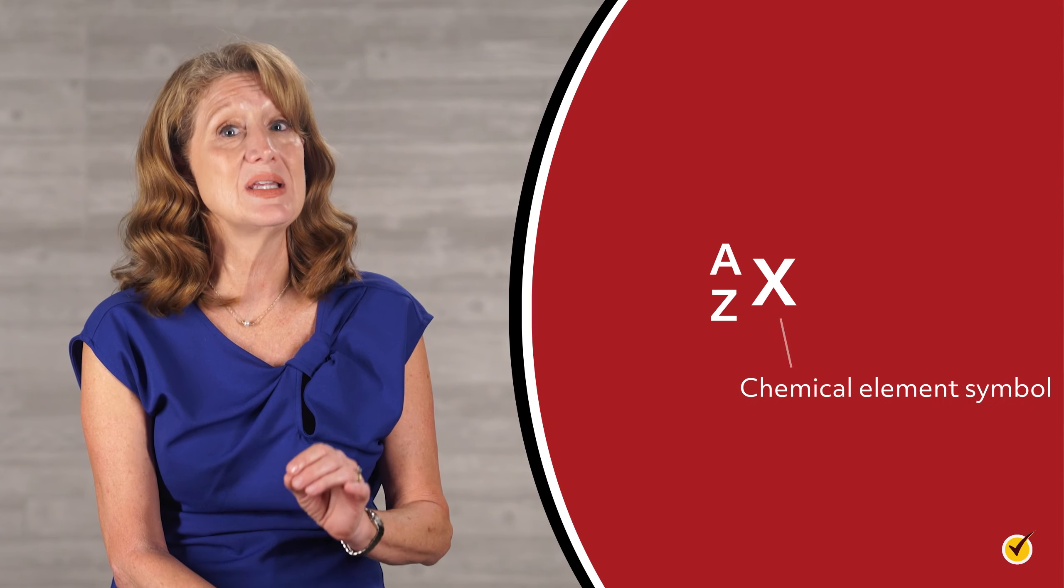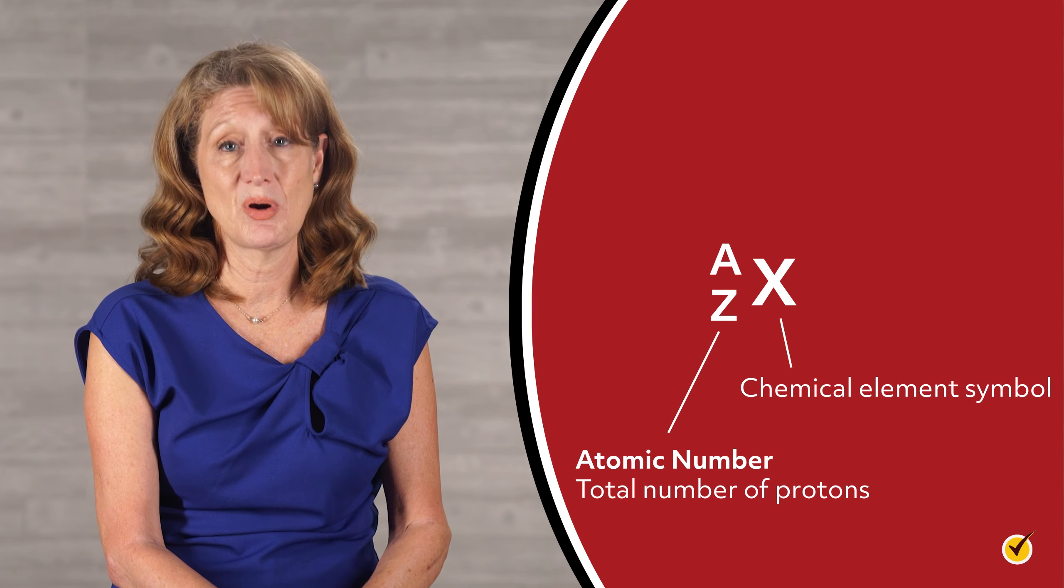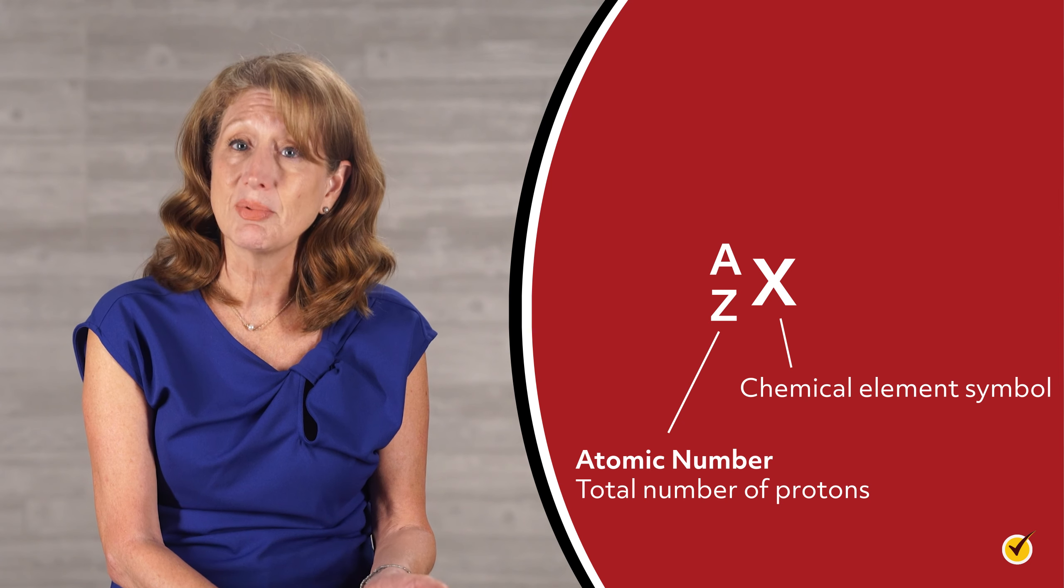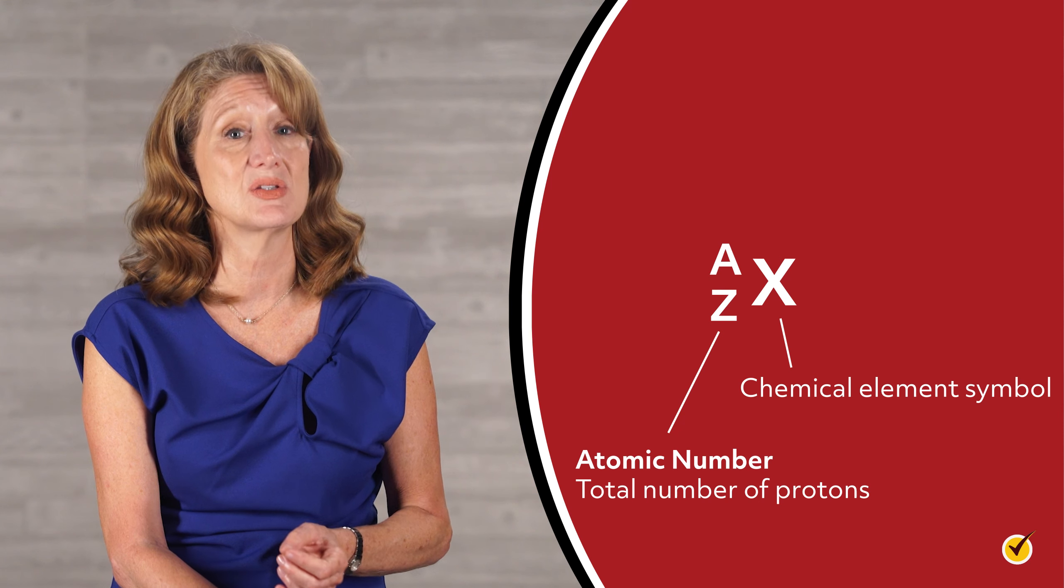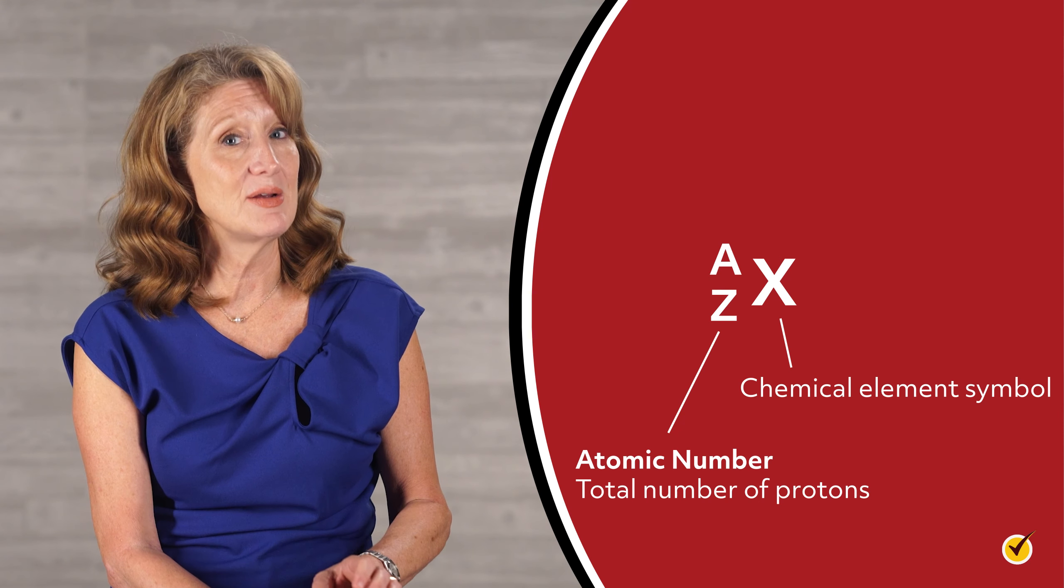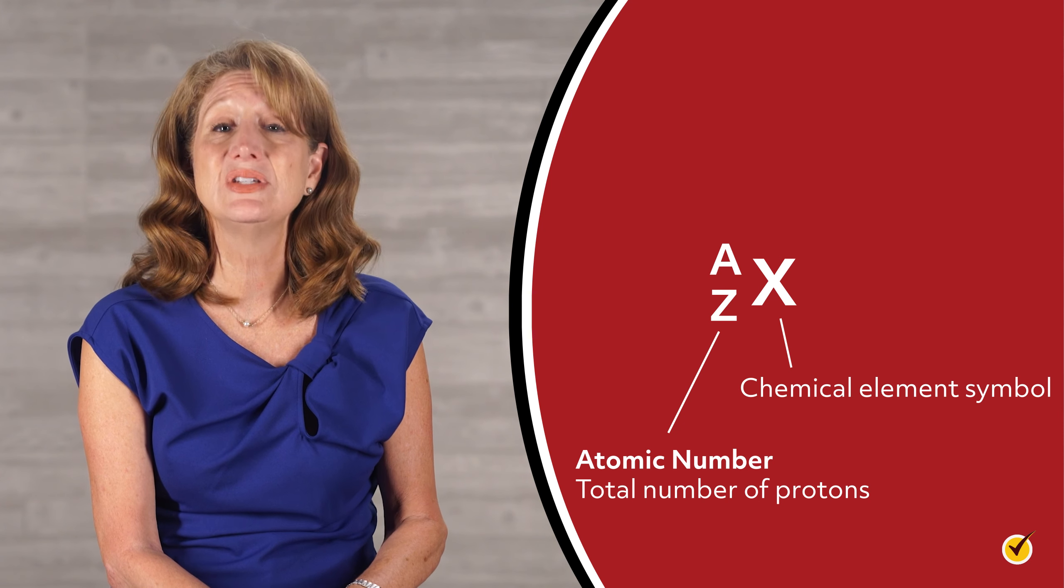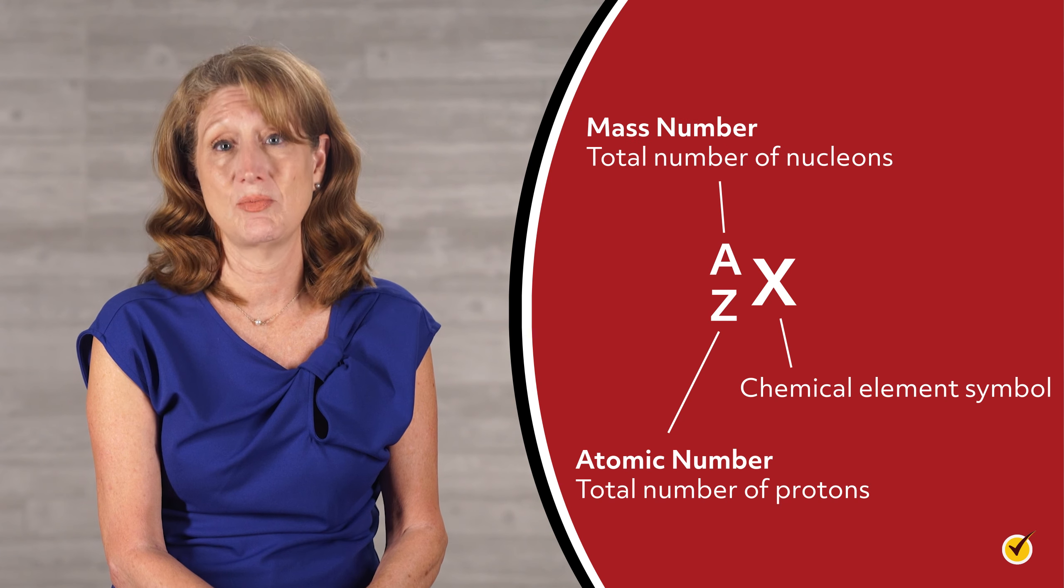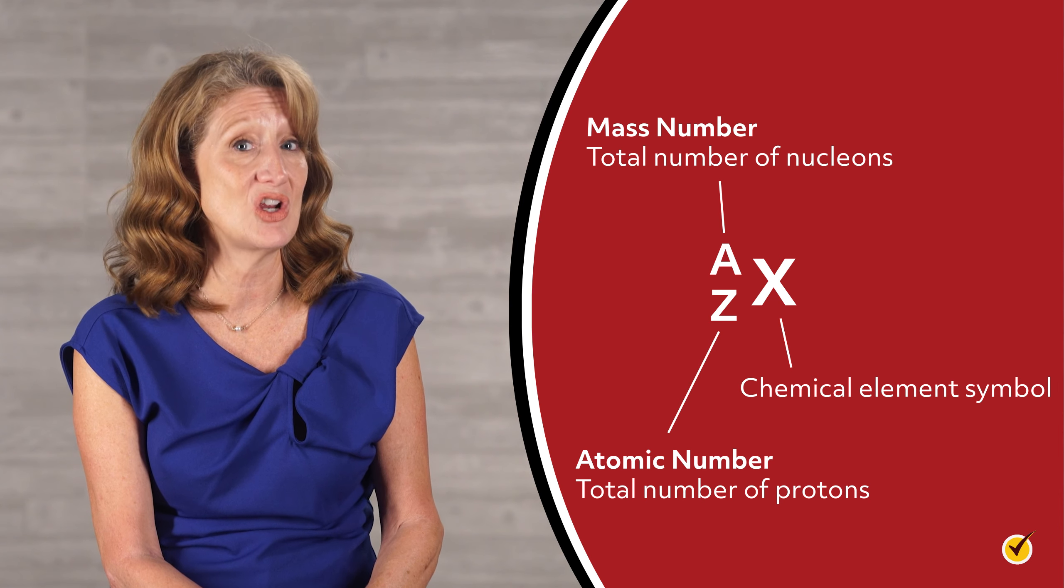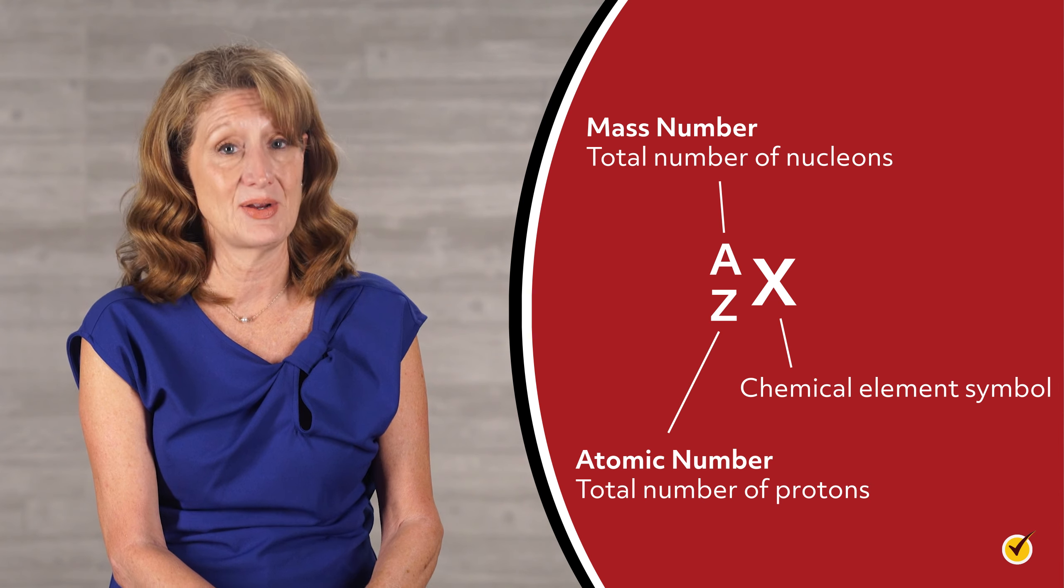Remember that all atoms of an element have the same atomic number, Z, which is the number of protons. So if that number changes, the elemental identity of the atom changes as well. However, atoms of the same element can have different mass numbers called isotopes because the number of neutrons can vary without changing the identity of the atom.